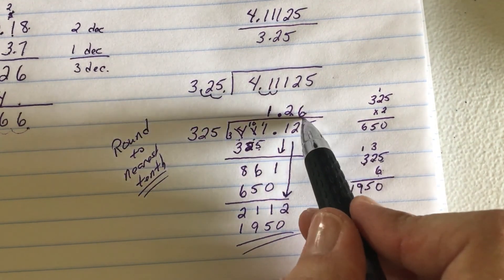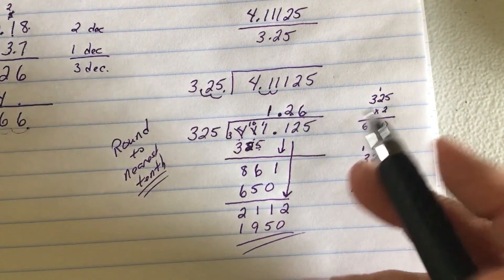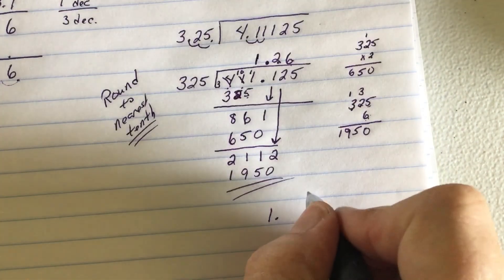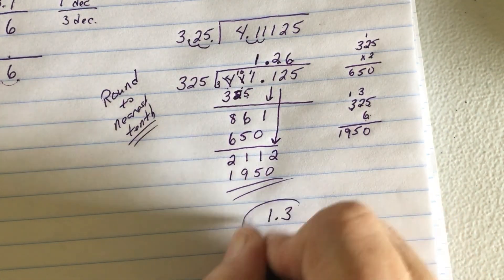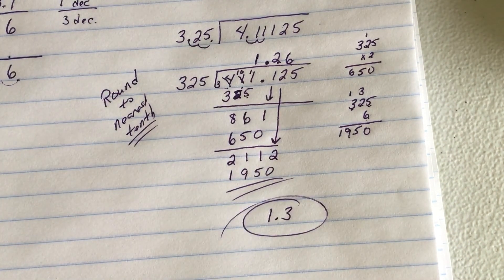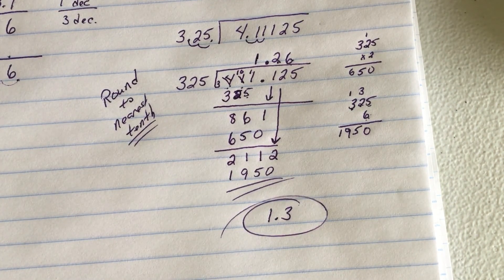So, the 6 tells me the 2 rounds up. So, my final answer is 1.3. Because the 6 says the 2 rounds up.